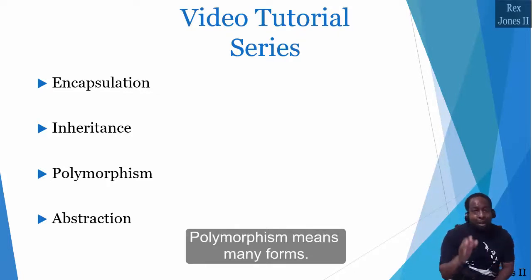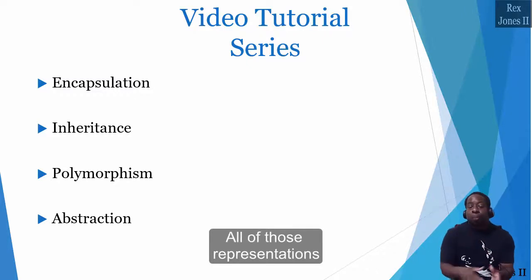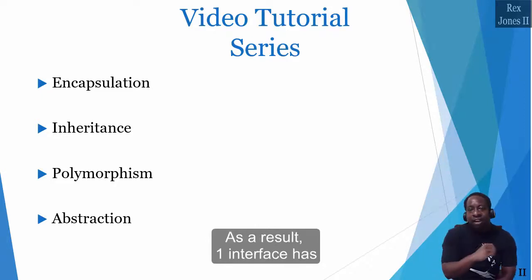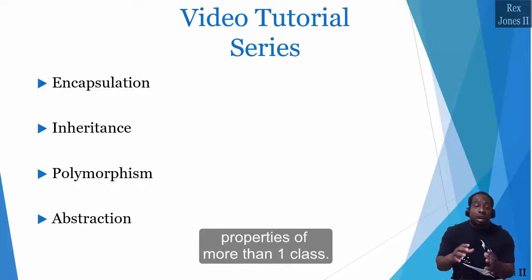Polymorphism means many forms. It allows an object to acquire many representations. All of those representations operate similar to each other. As a result, one interface has the ability to take on properties of more than one class.